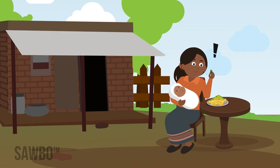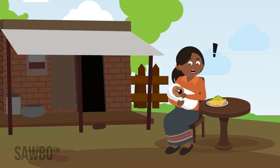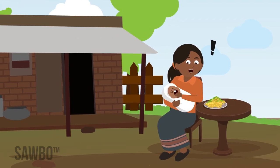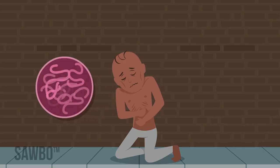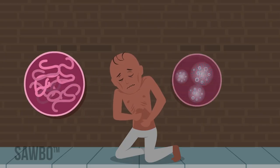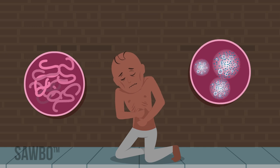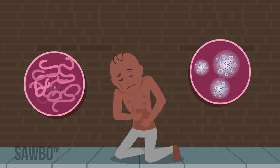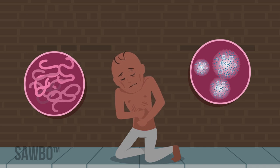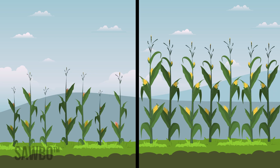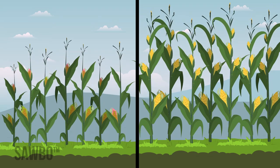If a breastfeeding mother eats aflatoxin-contaminated food, the baby's health can also be affected. Mycotoxin exposure can increase the chances of individuals suffering from diseases caused by other microorganisms, and it can worsen the effects of malnutrition.